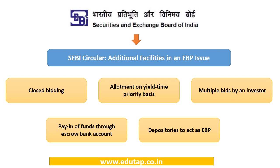The additional facilities introduced in this circular are: closed bidding, allotment on yield-time priority basis, multiple bids by an investor, payment of funds through an escrow bank account, and permission for depositories to act as Electronic Book Building providers.